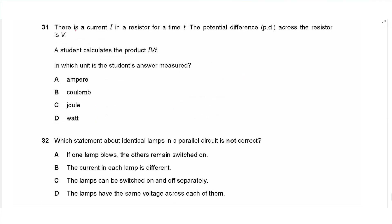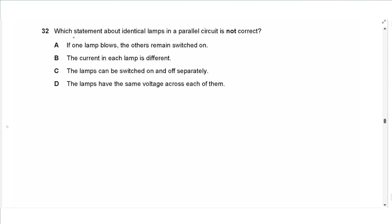Question 31: There is a current I in a resistor for time t, with potential difference V across it. The product I × V × t is the equation for energy, so its unit is the joule — not ampere, coulomb, or watt.